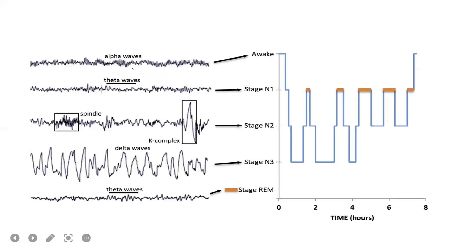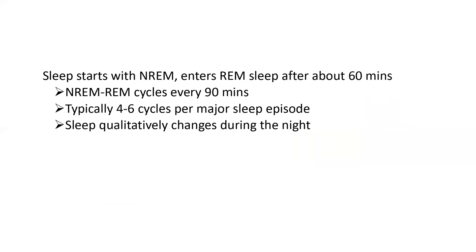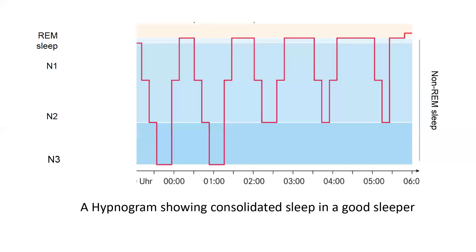These are the different waves present in different sleep stages. Alpha waves are typical of wakefulness. Theta waves are present in stage N1, and theta waves continue in N2 along with sleep spindles and K-complexes which define stage N2. Waves become slower — delta waves — in stage N3. Theta waves are also present in REM along with rapid eye movements. Usually there are four to five cycles of sleep during the night, each with a non-REM/REM cycle every 90 minutes, and sleep qualitatively changes during the course of the night.